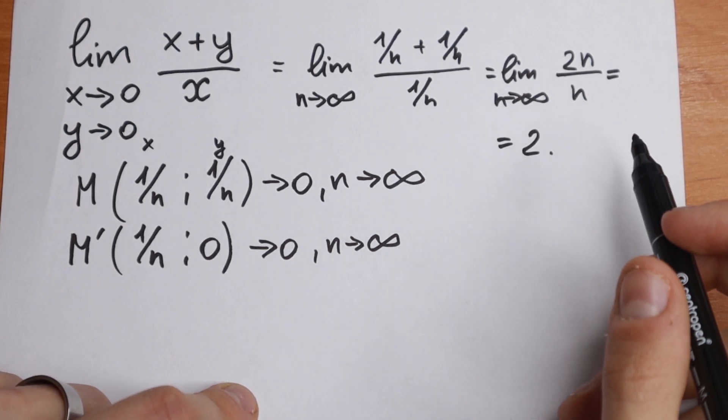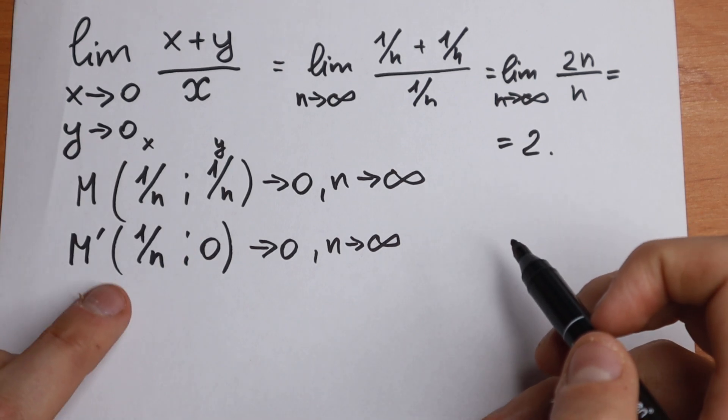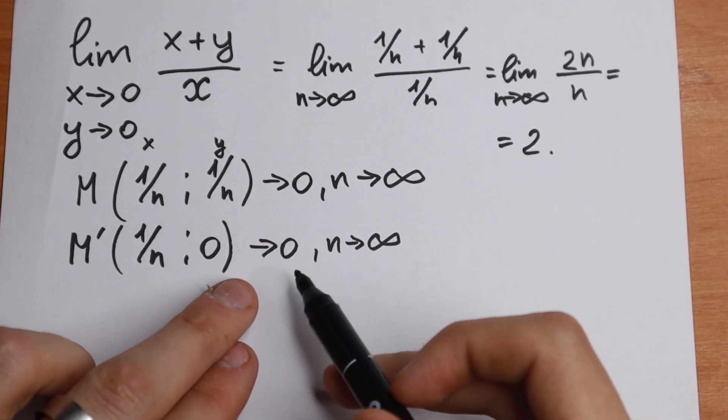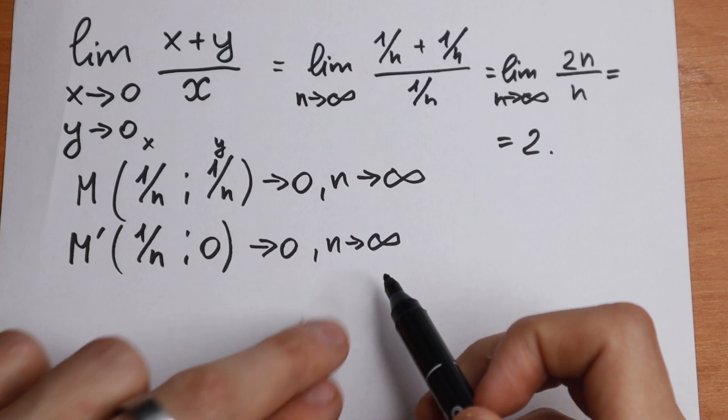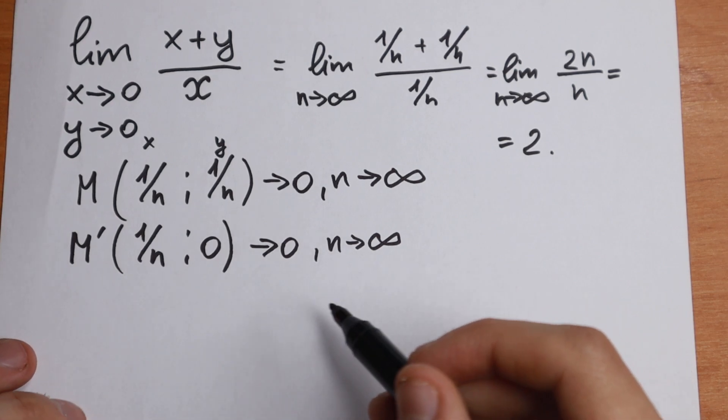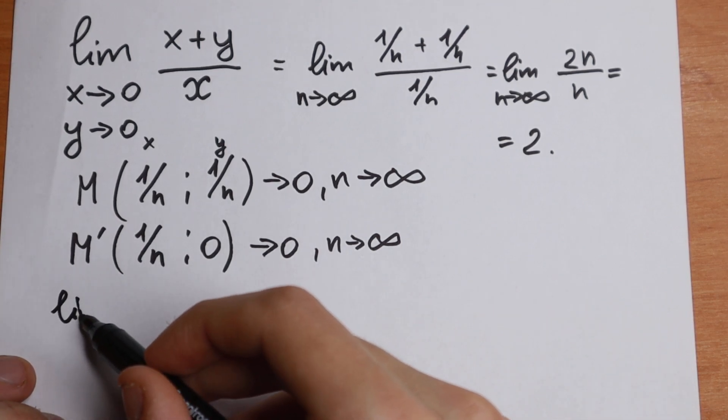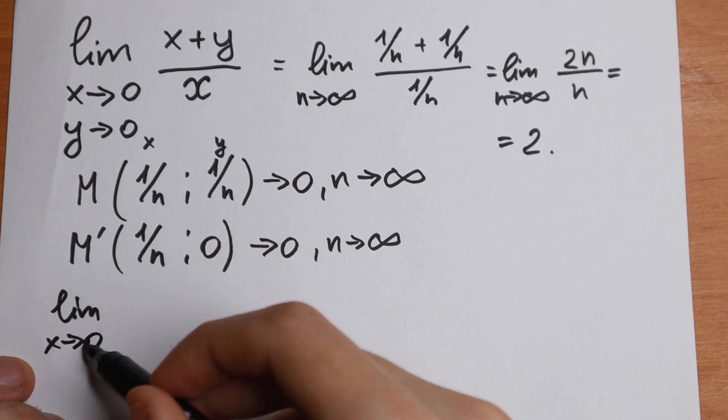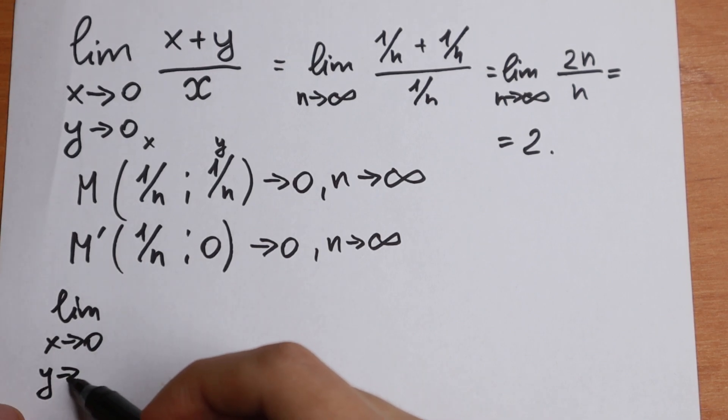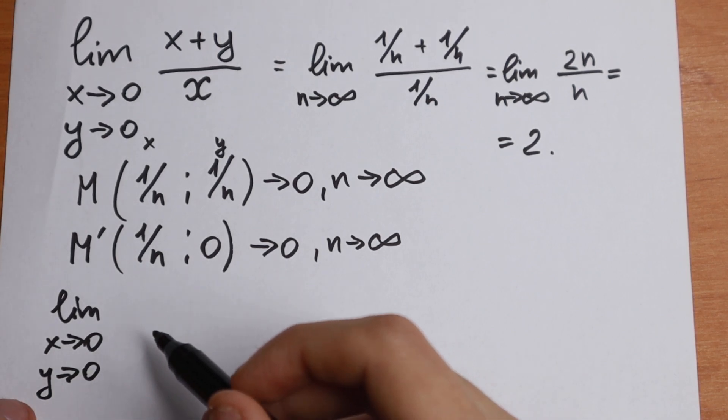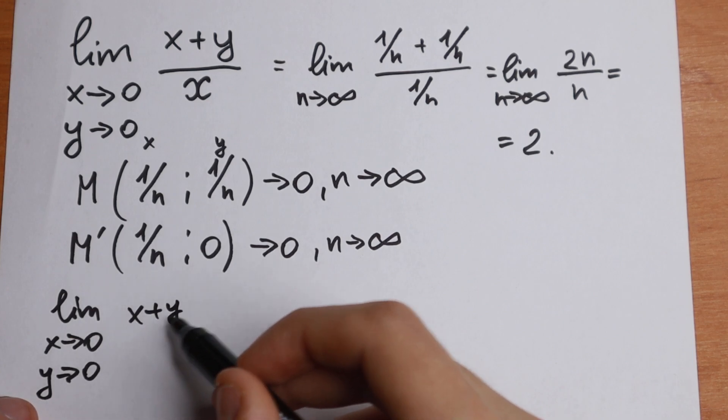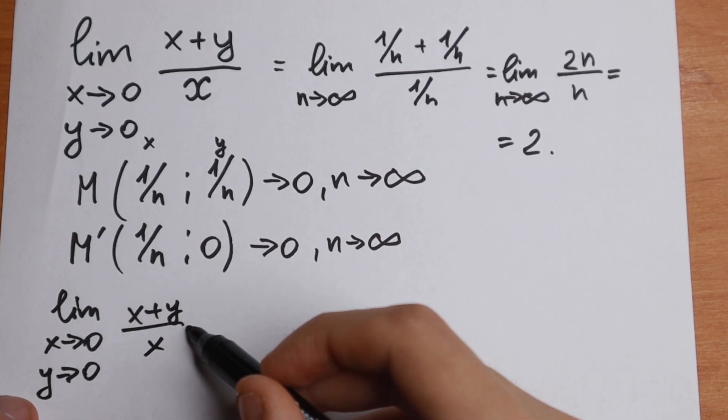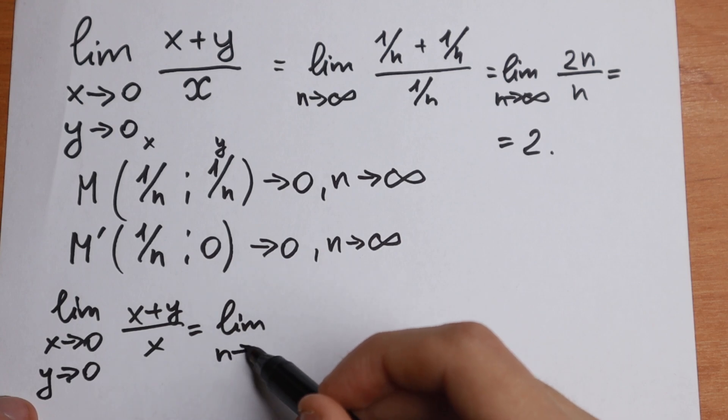As you can see we find our limit. But we have another dot, we have M'. This dot approaches to 0 as well, when n approaches to infinity. What we will have in our case? The limit as x approaches to 0 and y approaches to 0 of the function x plus y that we have in the beginning. It will be equal to limit n approaches to infinity of the function 1 over n, this is our x,